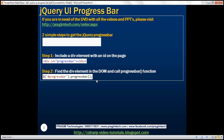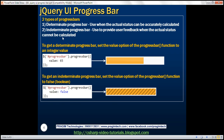There are two types of progress bars in jQuery: the determinate progress bar and the indeterminate progress bar. Use the determinate progress bar when the actual status can be accurately calculated. Use the indeterminate progress bar to provide user feedback when the actual status cannot be calculated. To get a determinate progress bar, set the value option of the progress bar function to an integer value between 0 and its maximum value.